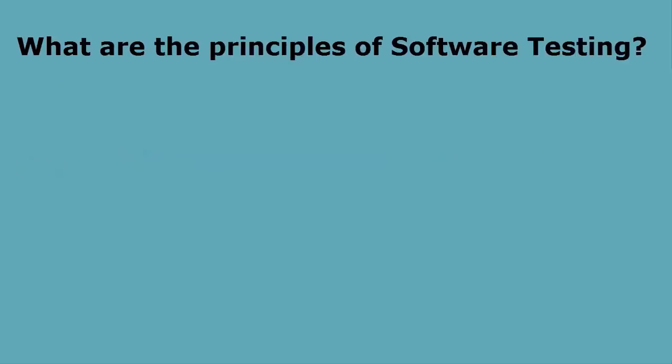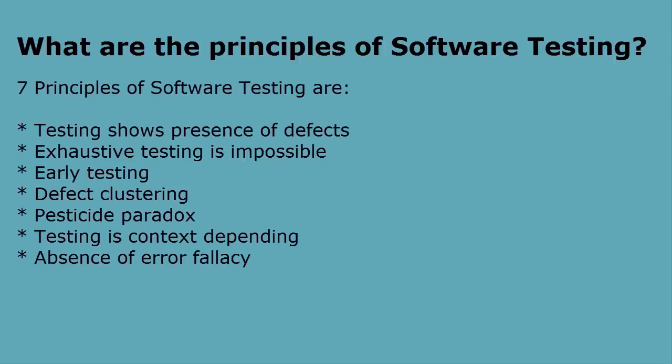What are the principles of software testing? There are seven principles of software testing: first, testing shows the presence of defects; second, exhaustive testing is impossible; third, early testing; fourth, defect clustering; fifth, the pesticide paradox; sixth, testing is context-dependent; and seventh, absence of error fallacy.